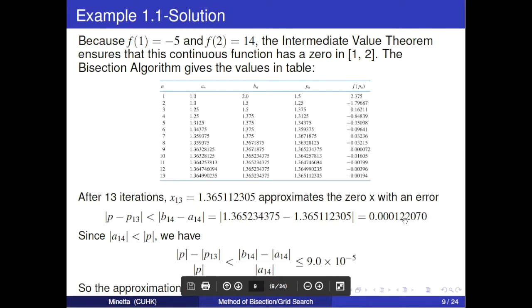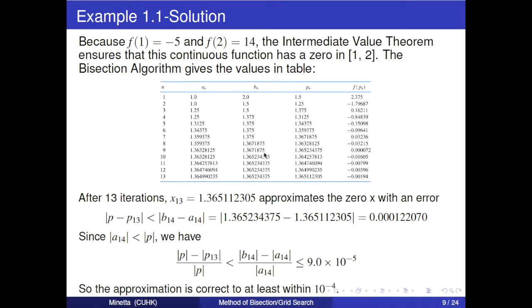Here is the specific solution. First, we check if there is a zero. By calculation, we know that f(1) is less than 0 and f(2) is larger than 0. By IVT, we ensure that this continuous function has a zero in this interval. According to the steps we mentioned before, we can get this table. After 13 iterations, we can get the root equals this value with an error less than this value. Finally, we make sure that the approximation is correct to at least within 10 to the power negative 4.